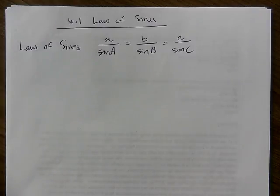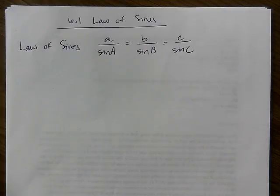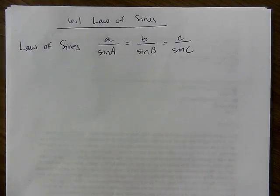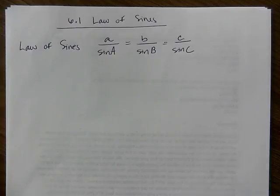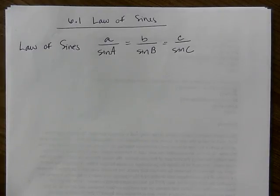We're going to do lots of cross-multiplying and use our graphing calculators because these are going to be non-unit circle values. Law of Sines can be used for right triangles, but most of the time we use it for non-right triangles. Everything we've done so far is right triangle trig — SOH-CAH-TOA and Pythagorean theorem. Now we're moving into non-right triangles.